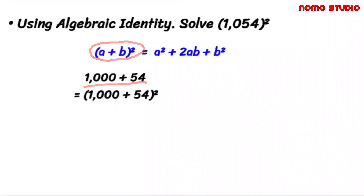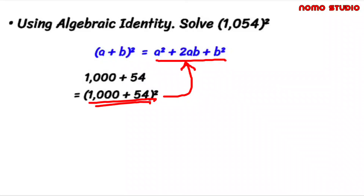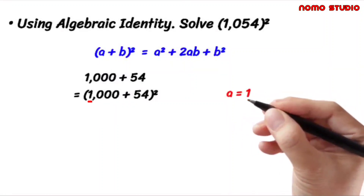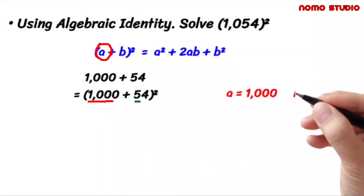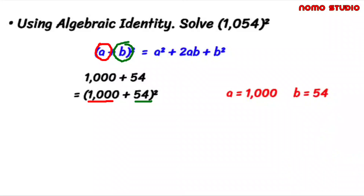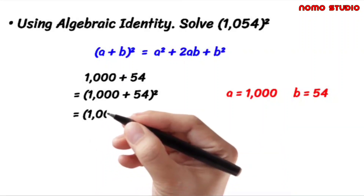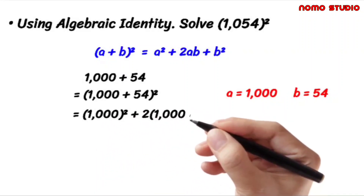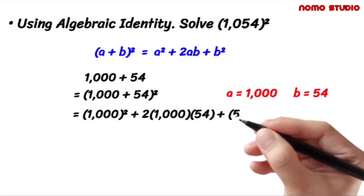Now we can solve this 1054 squared using an algebraic identity. Here, 1000 is our a and 54 is our b. So we have 1000 squared, plus 2 times 1000 times 54, then plus 54 squared.